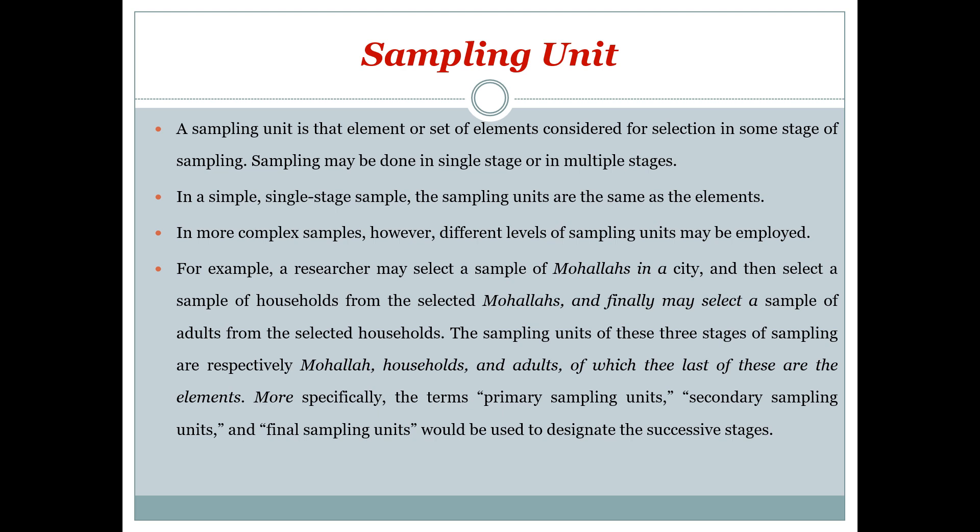In more complex samples, different levels of sampling units may be applied. For example, a researcher may select a sample of Mohallas in a city, then select a sample of households from those selected Mohallas, and finally select a sample of adults — not children or elderly — from those selected households. The sampling units of these three stages are respectively Mohalla, household, and adults.